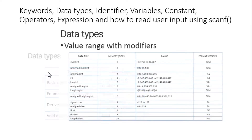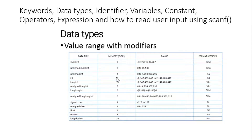We can use modifiers to change the value range of each data type. For example, int uses 4 bytes of memory, but using short int or long int changes the memory allocation. There are specific ranges for the lowest and highest values depending on the data type specified. Format specifiers can be used with scanf and printf functions to read and print data of different types.